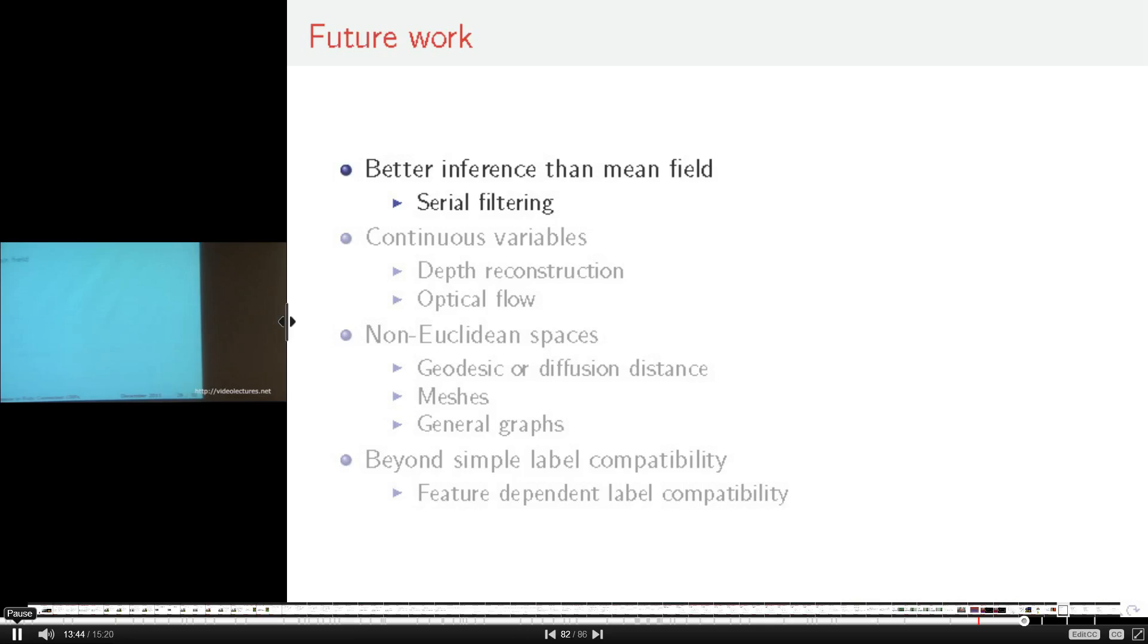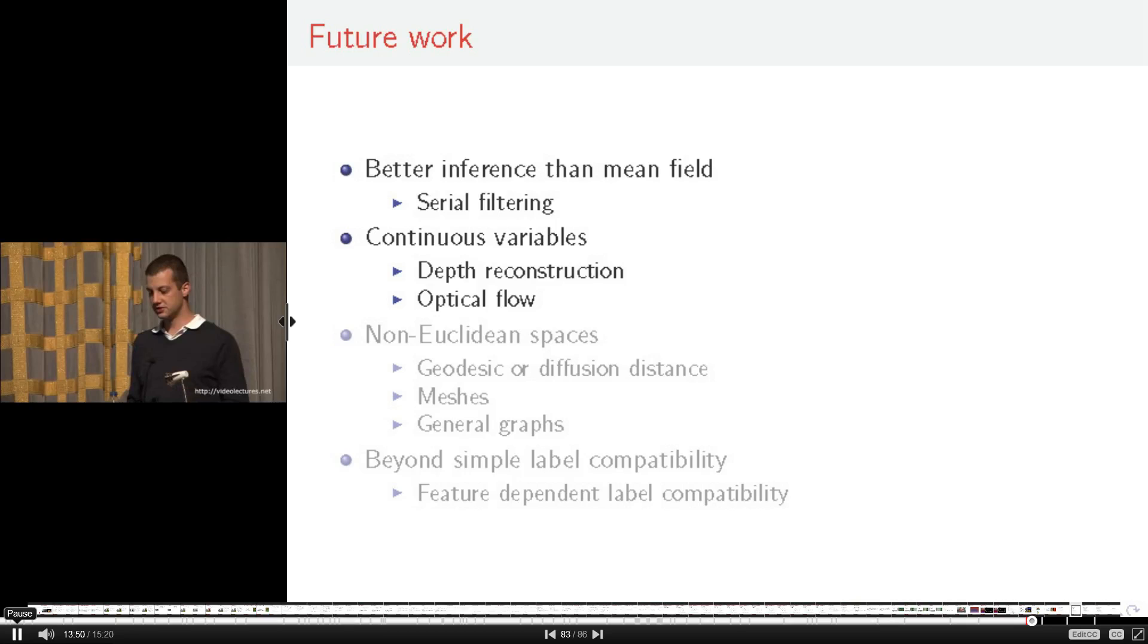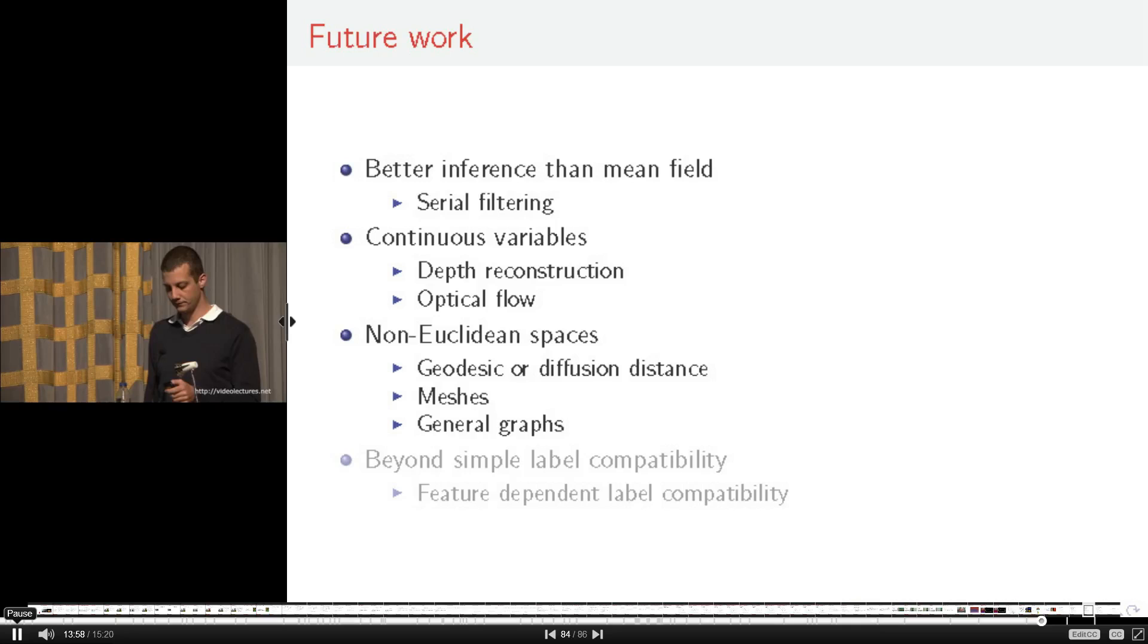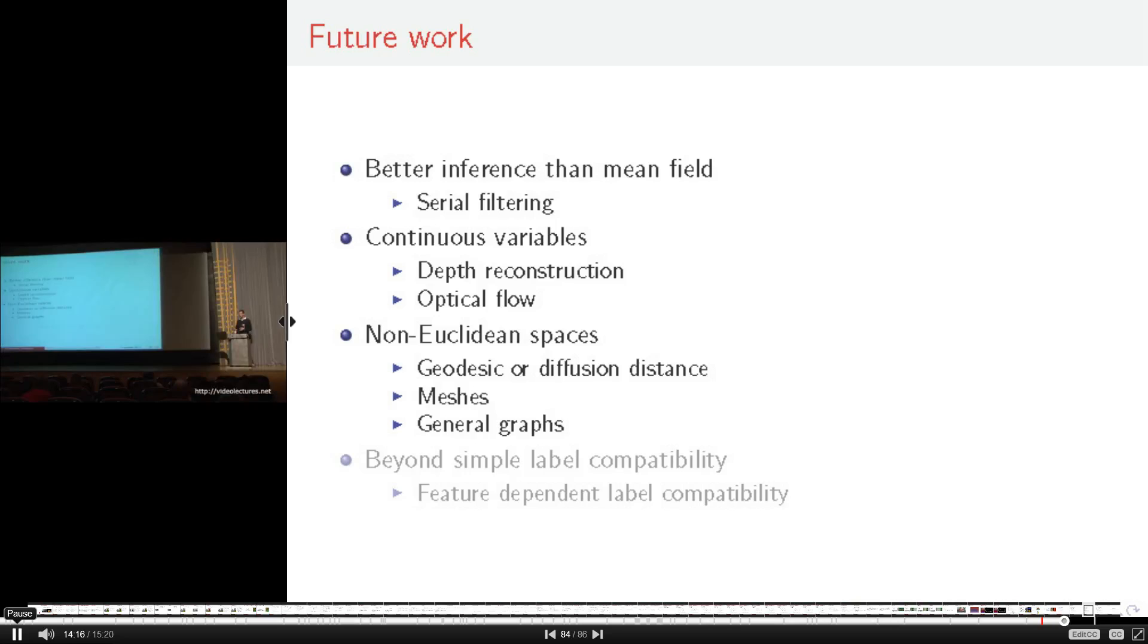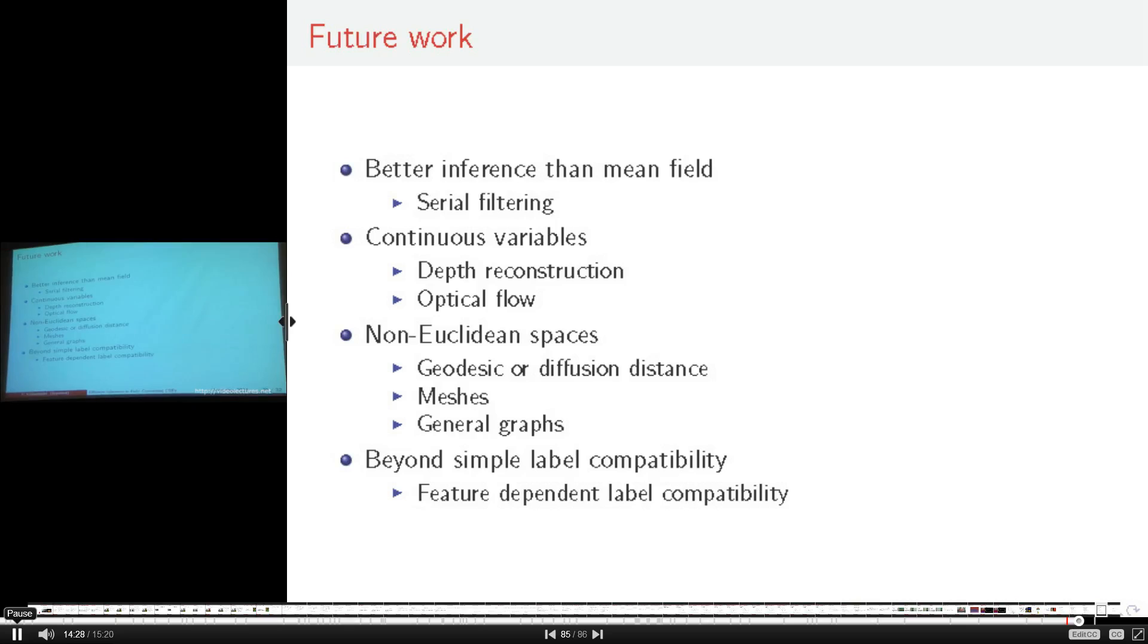The second area we're extending the fully connected model to is continuous variables, and we're currently investigating using it for depth reconstruction or optical flow estimation. Another area that's very interesting is extending it to non-Euclidean spaces. For example, in meshes or general graphs, a Euclidean space either doesn't exist or is not very meaningful such that spaces such as geodesics or diffusion distance are way more meaningful in those spaces. The last point is going beyond this simple label compatibility function. Right now the label compatibility function is strictly separated from any features in the image, so finding a label compatibility function that can use some of the underlying features in the image would greatly increase the overall expressive power of the model.